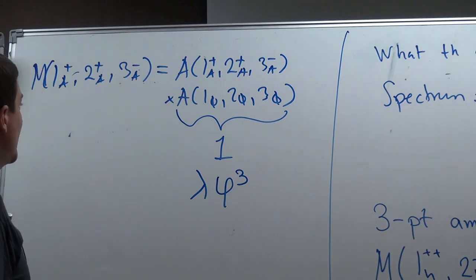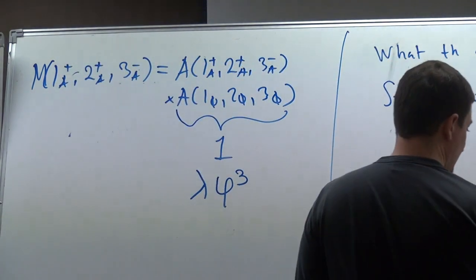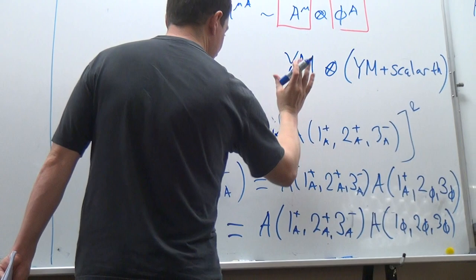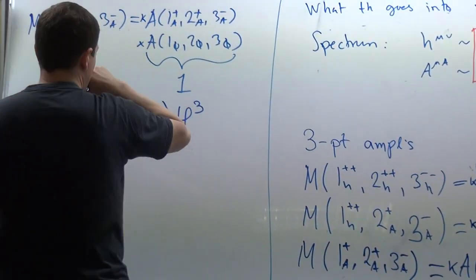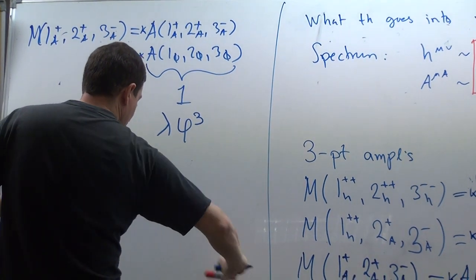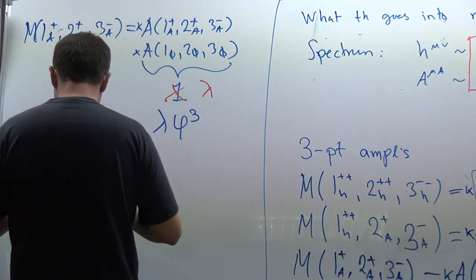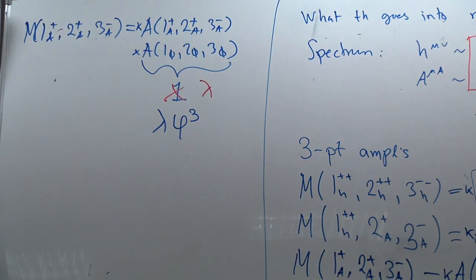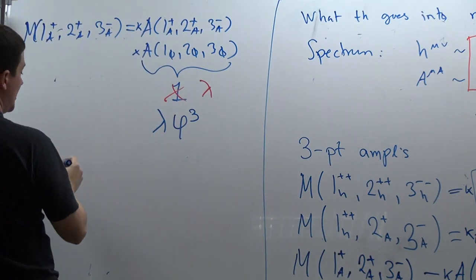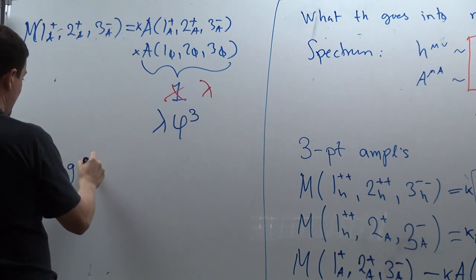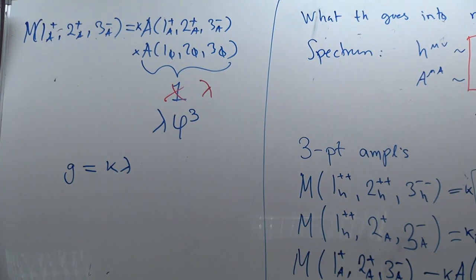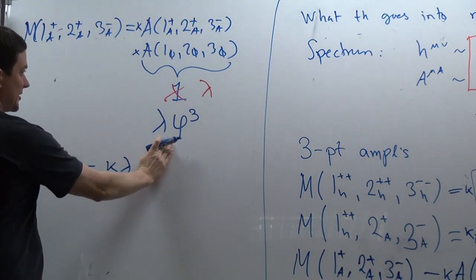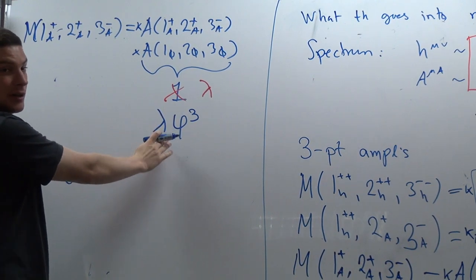Putting the couplings back in: there should be a kappa for the gravitational interaction, another kappa for the graviton-vector coupling, and a kappa and a lambda for the scalar vertex. So now you can see an interesting thing: this is supposed to be a Yang-Mills amplitude, but it's going to have a product of kappa and lambda. So if you call it gauge coupling G, G has to be related as G equals kappa times lambda. And you can see that makes sense dimensionally, because if this interaction is part of a gauge theory, lambda has to have dimension one.